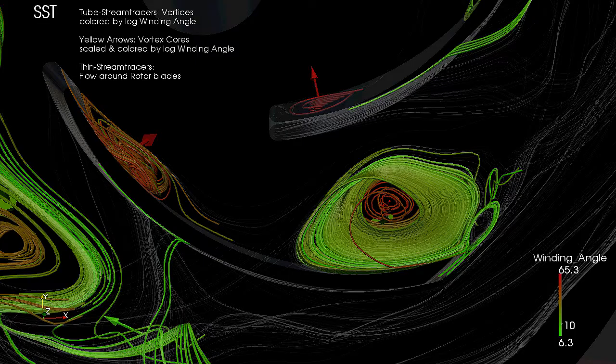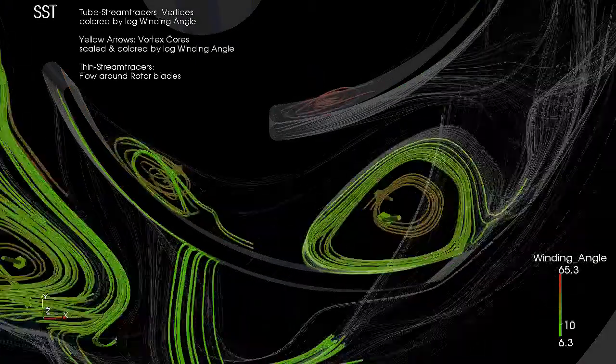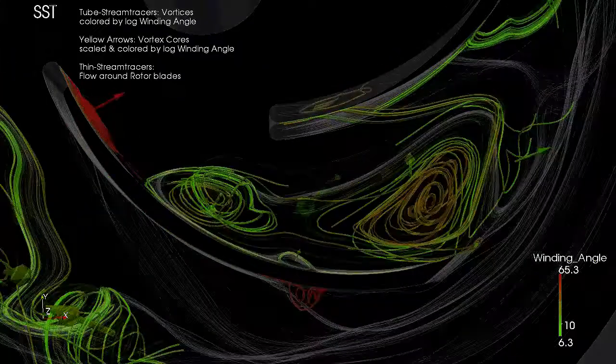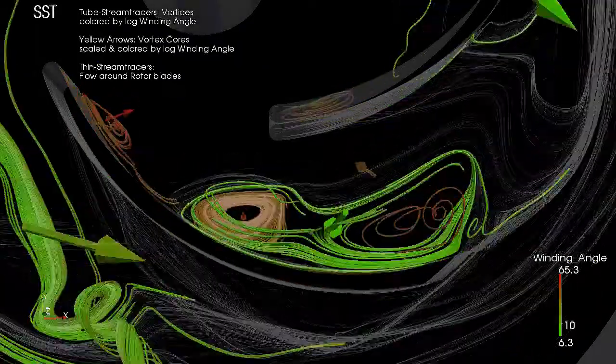The arrows represent vortex cores. Here, the right vortex starts deforming and separating into sections with varying winding angles. Now, the right vortex merges with the left vortex.